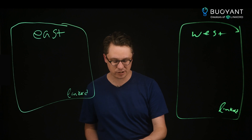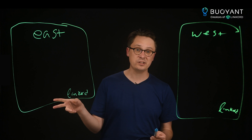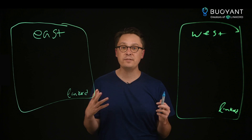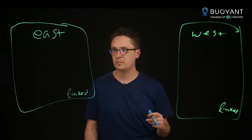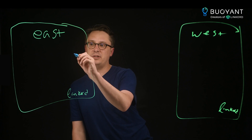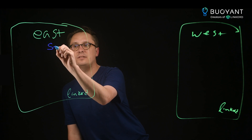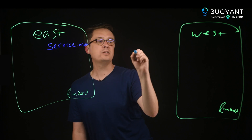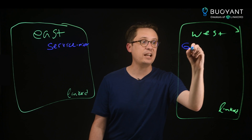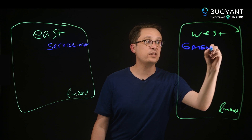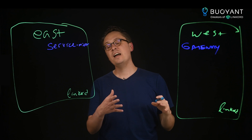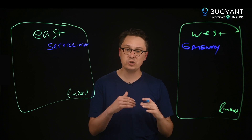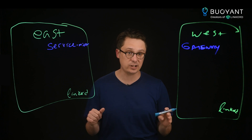The Linkerd multi-cluster extension transparently enables cross-cluster communication as if they're part of a single service mesh. It has two components: one is the service mirror, and the other is a gateway. You can think of the gateway as an ingress — but a special ingress just for Linkerd's MTLS functionality.